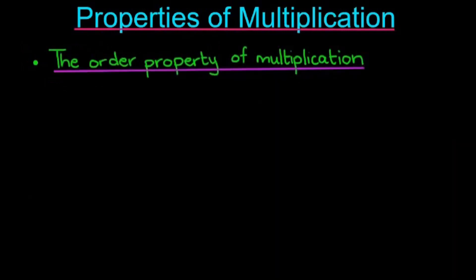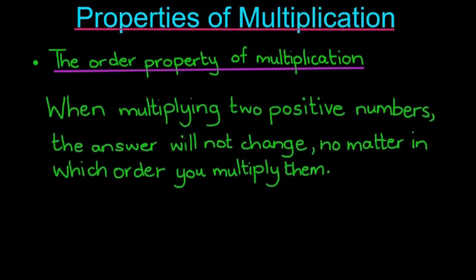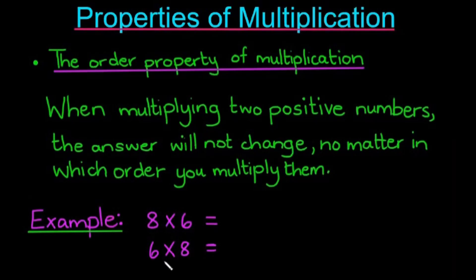So the order property of multiplication, what is that? Well, when multiplying two positive numbers, the answer will not change no matter in which order you multiply them. So in the following example, I have 8 times 6 and 6 times 8. Both of these answers will give me the number 48, showing that no matter which way I multiply them, they will always equal the same amount.